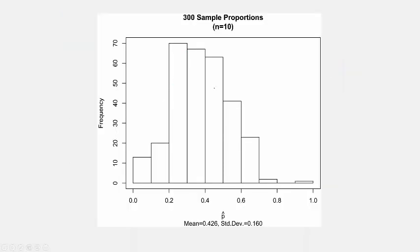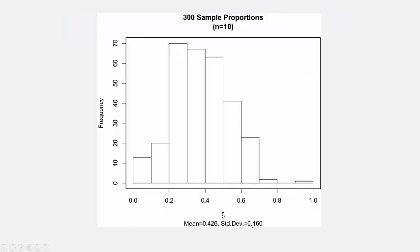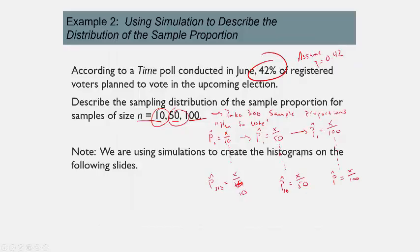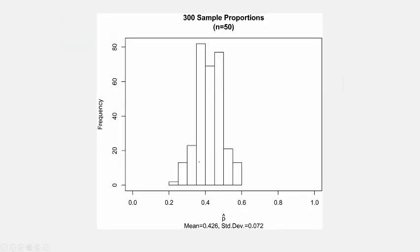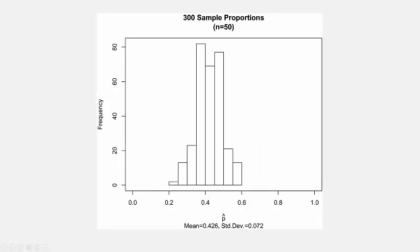For sample size 10, the histogram of the 300 p-hats doesn't really look like a normal distribution. But look at the mean — it's 0.426, really close to the real population proportion. The standard deviation is 0.16. Now for sample size 50, it's getting more normal. The mean is still 0.426, and as we increased the sample size, the standard deviation went down from 0.16 to 0.072.